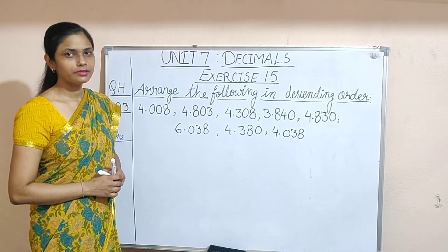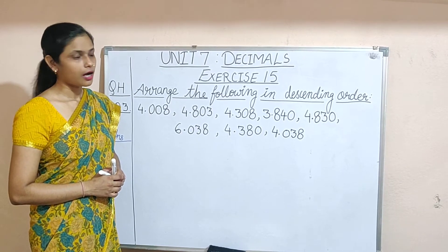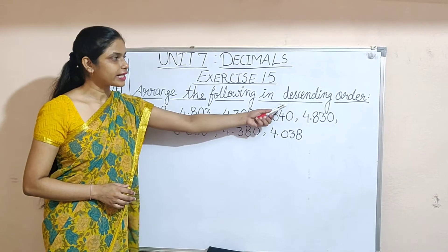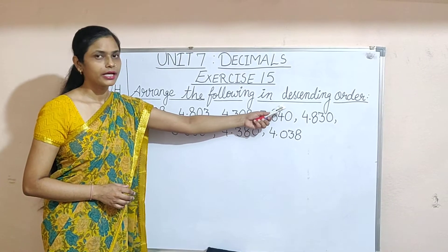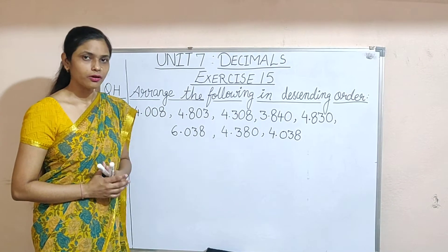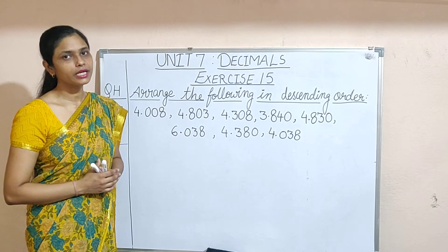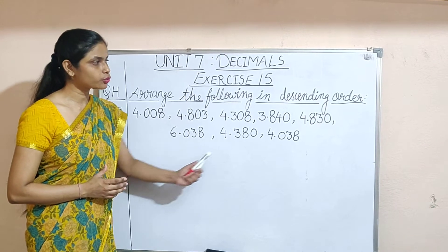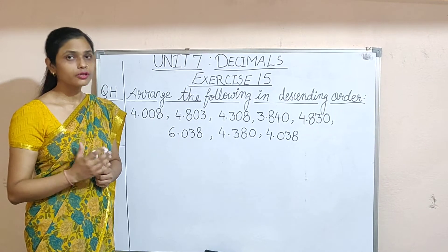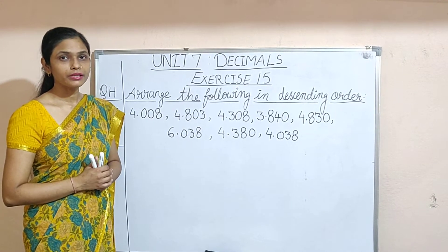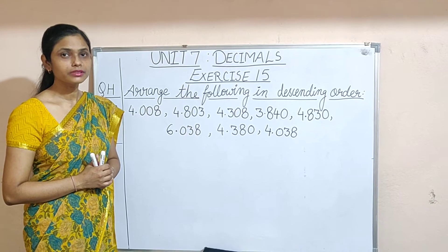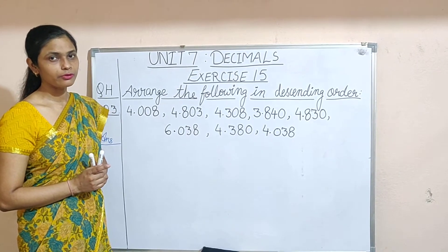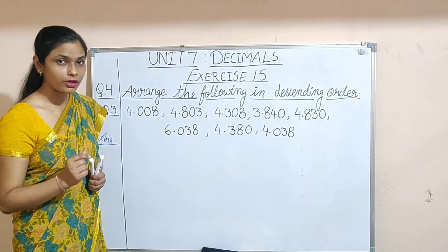Today we will learn how to arrange decimal numbers in descending order. Descending order means we arrange numbers from bigger to smaller. You already know how to compare decimal numbers, so first to compare decimal numbers we have to compare the whole number part.